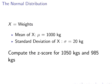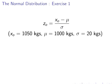Let's put it into action now. Suppose x is weights, and the mean of x is 1000 kg, and the standard deviation is 20 kg. Compute the Z-score for 1050 kg and also 985 kg. So we've got two little examples there. The first example is 1050 kg, and those are the values there again.